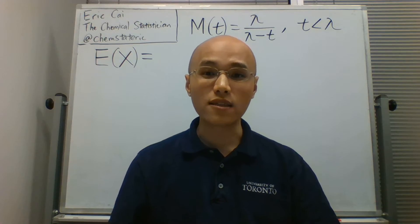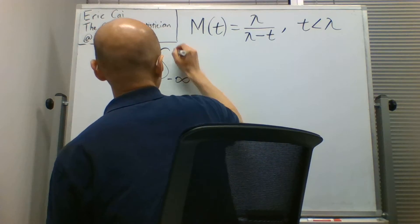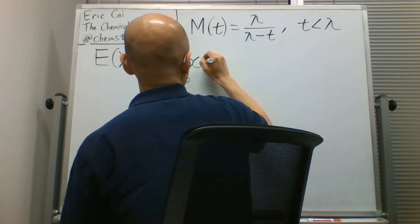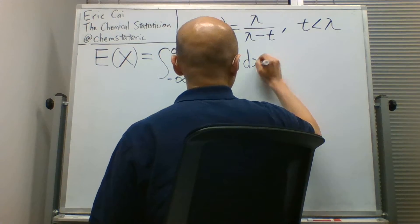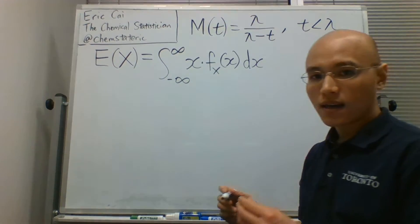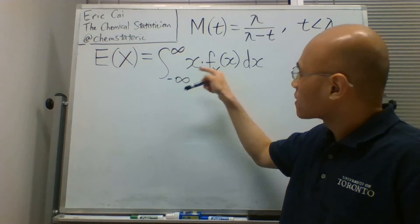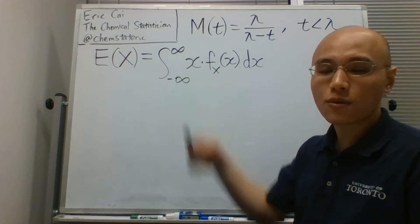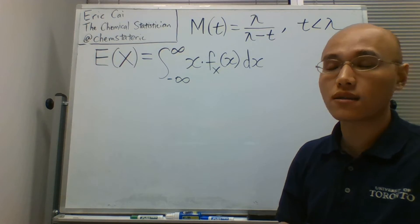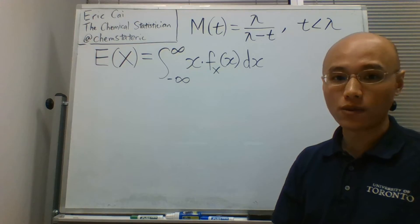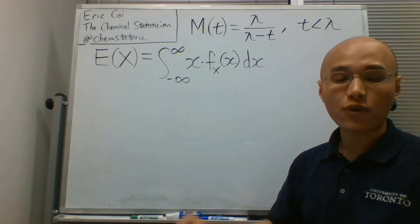The expected value is defined as x times the probability density function, and integrating this integrand from negative infinity to positive infinity. The exponential random variable is a continuous random variable, so this is the definition of the expected value for a continuous random variable.